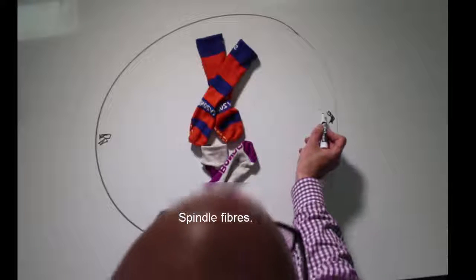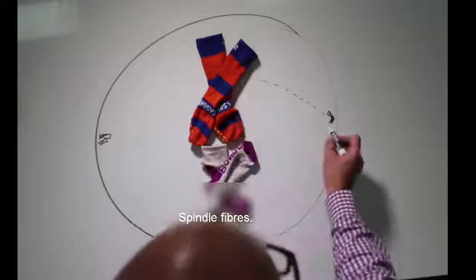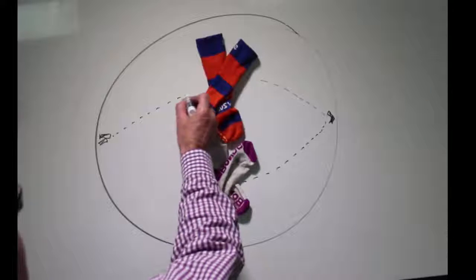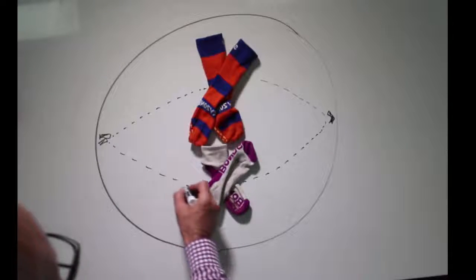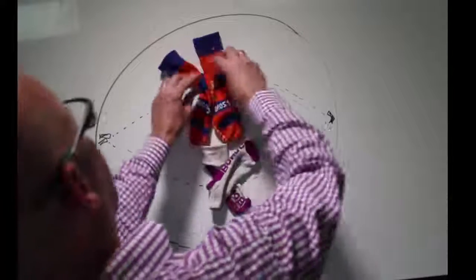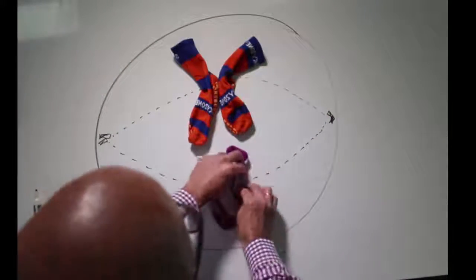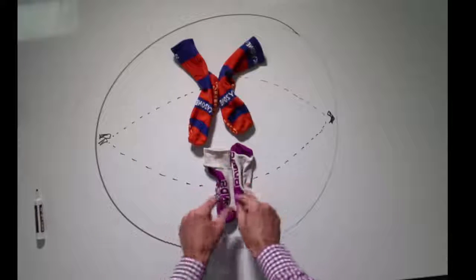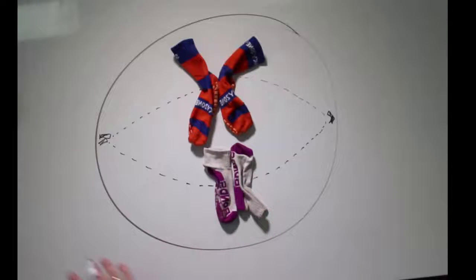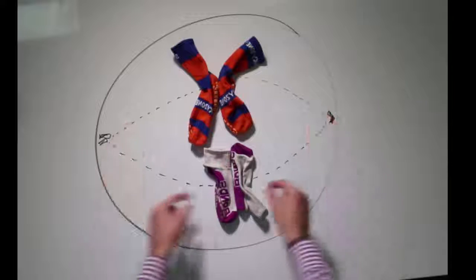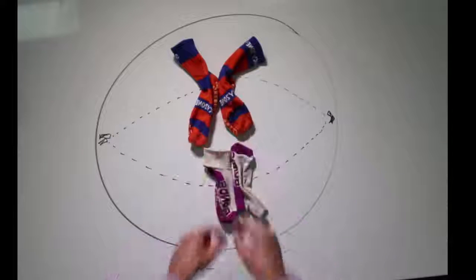We have spindles that extend from the centrioles and attach to our chromatids. So they're kind of aligned more like this. It's very important that our spindles actually attach to the chromatids like this. They're lined up along the equator otherwise known as the metaphase plate, and we've got spindles extended out and attaching to the chromatids.